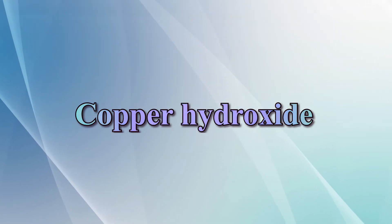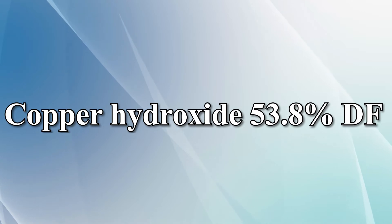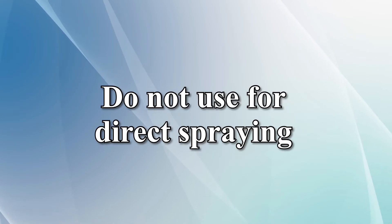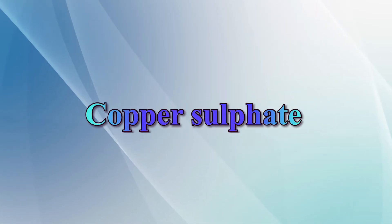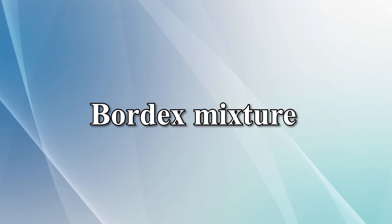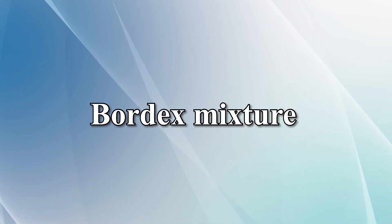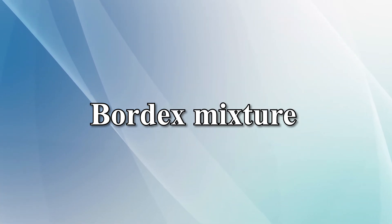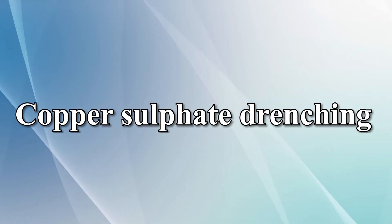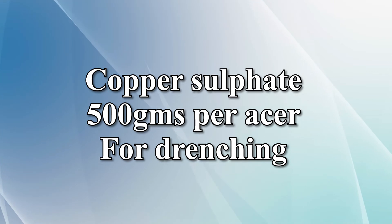FMC company sells copper hydroxide under the name COSIDE 2000, which contains copper hydroxide 53.8% DF formulation. Copper sulfate is very acidic and cannot be used for direct spraying, so its pH value needs to be increased. When lime is used with copper sulfate, this is called Bordeaux mixture, which is more impactful and works for a longer period of time. Copper sulfate drenching is also used in India to control diseases like wilt and dieback, using 500 grams of copper sulfate per acre.